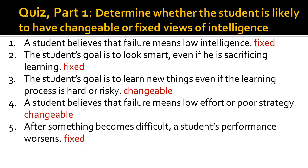For number four, students with a changeable view of intelligence believe that if they fail, it means they didn't try hard enough or have the necessary strategies or knowledge to succeed. Number five is fixed because this student would likely stop trying as hard at difficult things — why would he try if he does not have the natural ability? This lack of effort then leads to poor performance.